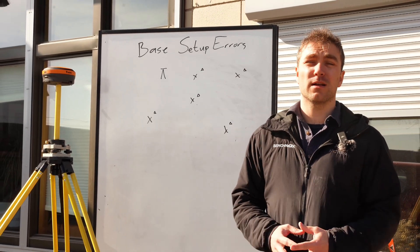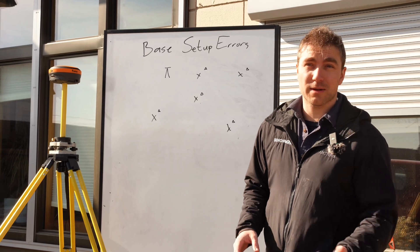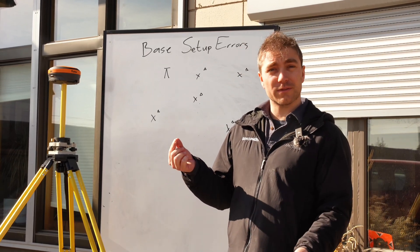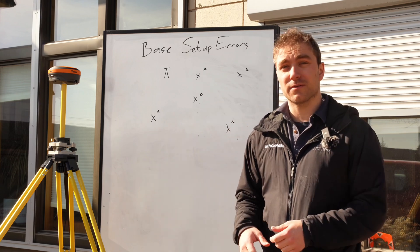And that average point on the base can be a foot or two different, and that makes all their rover data a foot or two different.